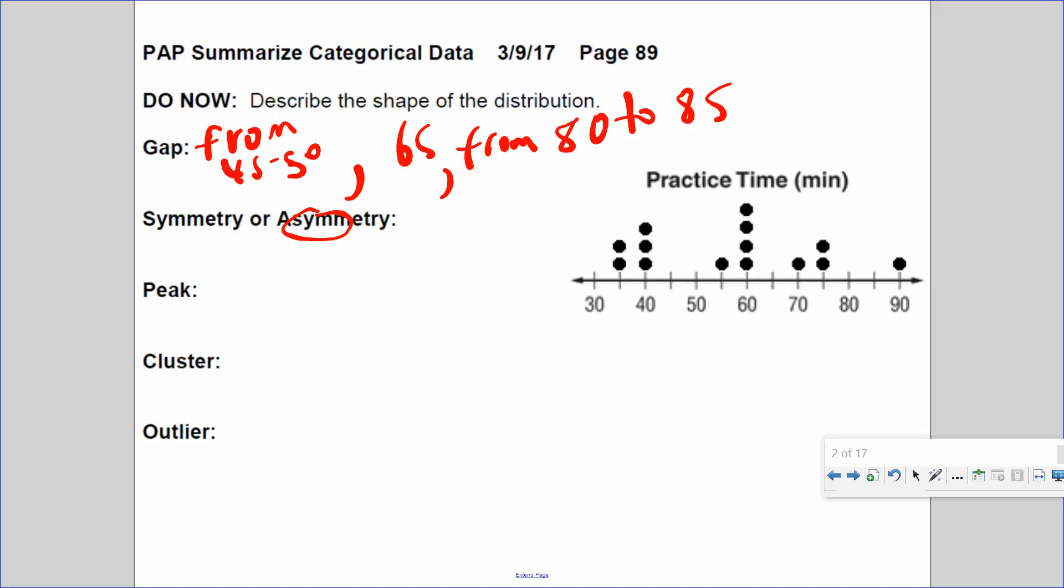Is there a peak? There is a peak. This is the practice time by minutes. The peak is at 60. That means four students responded that they practiced for 60 minutes. Is there a cluster? There is a grouping of numbers from 35 to 40, from 55 to 60, from 70 to 75.